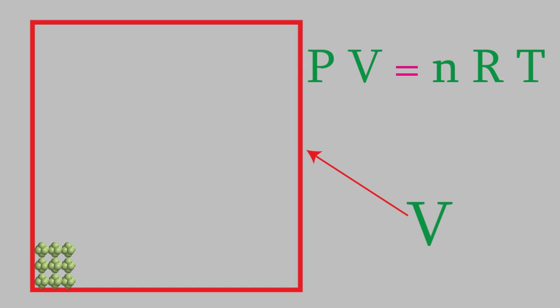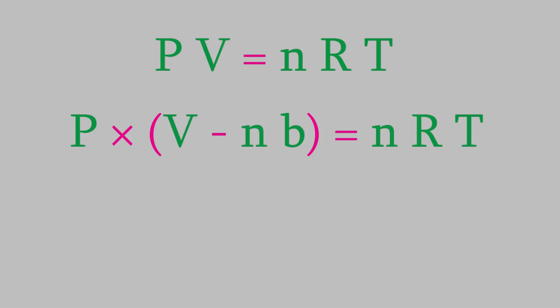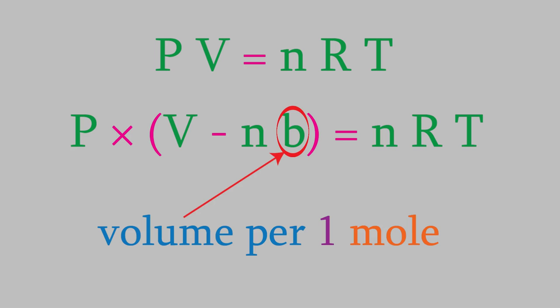So as a result, the volume that's available for the molecules to move around in is a little less than V, which is the total volume of the gas. So to make the ideal gas law more accurate, we shouldn't use V. Instead, we should subtract the tiny volume that's actually taken up by the molecules themselves. That will be equal to n times b, where n is the number of moles of gas, and b is the volume that a mole of actual molecules take up. So that takes care of one of the incorrect assumptions.